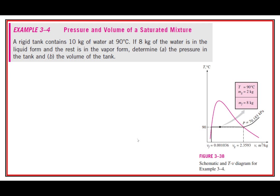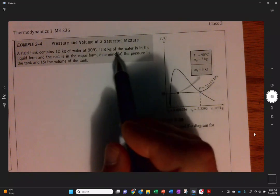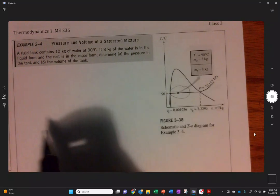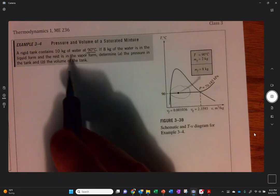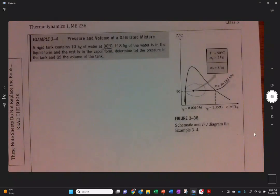We have a rigid tank with 10 kilograms of water at 90 degrees Celsius. If 8 kilograms of the water is in the liquid form and the rest is in the vapor form, determine the pressure in the tank and the volume of the tank. These little variations really trip us up, so we need to get really good at this.